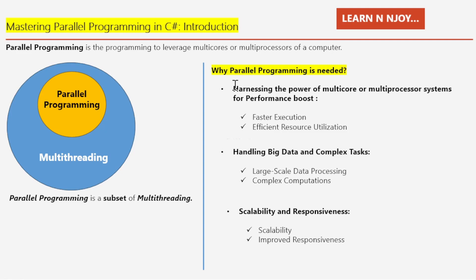Now, you must be thinking why Parallel Programming is needed. Here are a few reasons. Number one: in today's computers, they have multiple cores or processors working together. If we stick to the old-fashioned way of writing programs using traditional multi-threading, we will miss out on the benefits and won't be able to make the most of the computer's power with its multiple cores or processors. It's like using an old map when there is a faster route available.